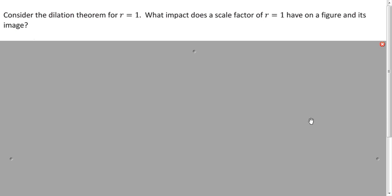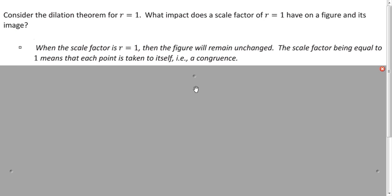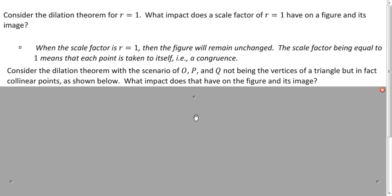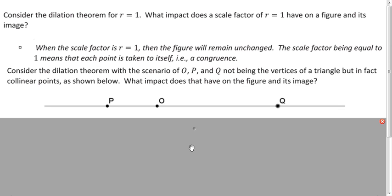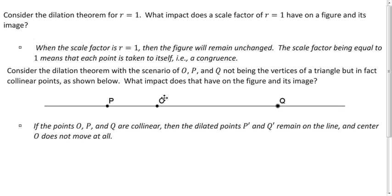So what happens if the scale factor is one? Well, if it's one, you have the identity transformation. So you actually have a congruence in this case. And what if your center and those two points are collinear? What's going to happen to your figure? Well, if you do the dilation, if you dilate point Q, that's going to be somewhere on this line. If you dilate point P, that's going to be somewhere on the line. So those will all be collinear. And your center stays invariant.